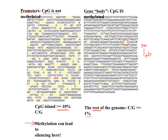Recall that a transcription factor is going to be on the lookout for its consensus sequence of DNA, bind to it, and help call RNA polymerase to start transcription. However, if each of these cytosines is modified with a methyl group, that's going to change what the DNA structure looks like to a protein trying to bind. So instead, the transcription factor won't bind — we're not going to have transcription if we have methylation of CpG islands in the promoter.